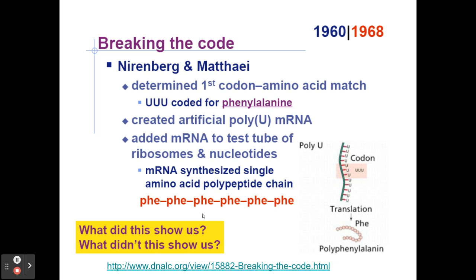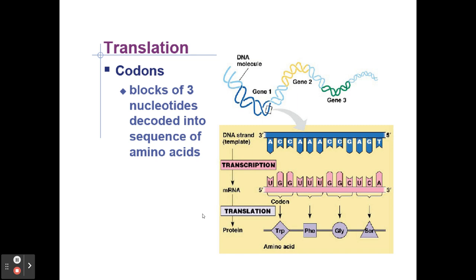If it took two nucleotides to code for an amino acid, the maximum number that could be coded for with four bases would be 16 — four to the second power, or four times four equals 16. Still not enough. So they hypothesized it must be three. Four to the third power equals 64, and that would be more than enough to code for the 20 amino acids. They figured out it was blocks of three nucleotides that decoded the sequence of amino acids.